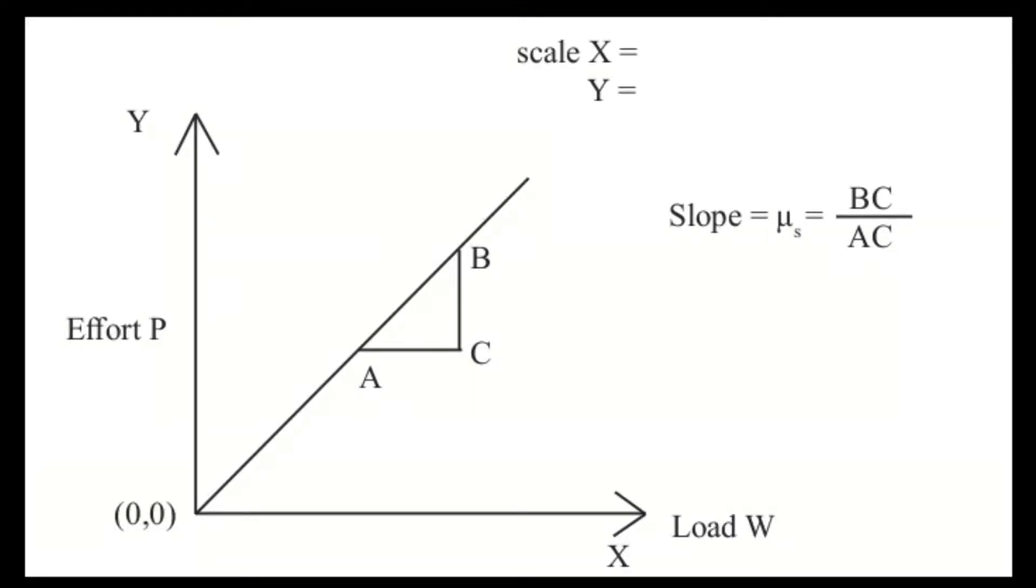As we have calculated the coefficient of static friction from calculation, we can also calculate that from the graph. To plot the graph, you have to plot P, that is effort on y-axis, that is the vertical axis, and you have to put values of load, that is the weight on the block along x-axis. Then, you will get some straight line and find out the slope of that line. The slope of that line is equal to μₛ, that is the coefficient of static friction.